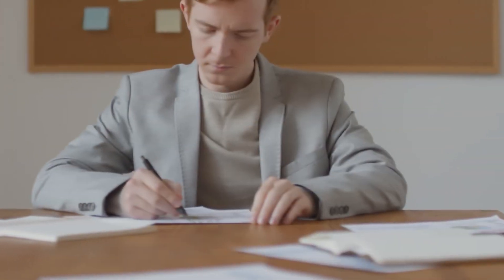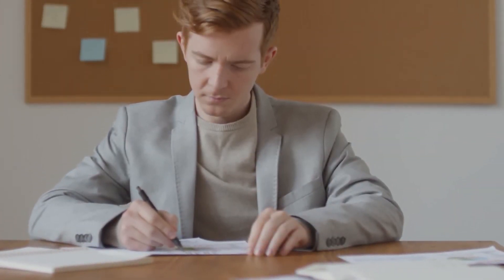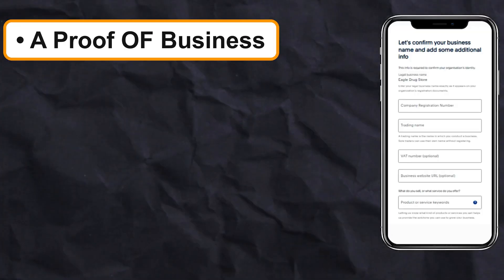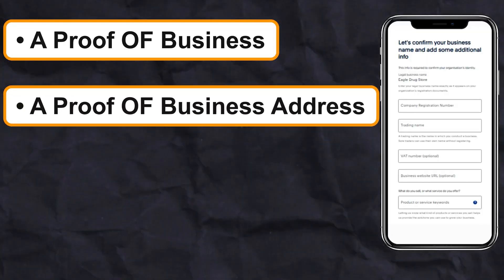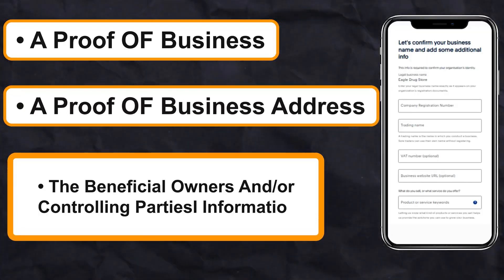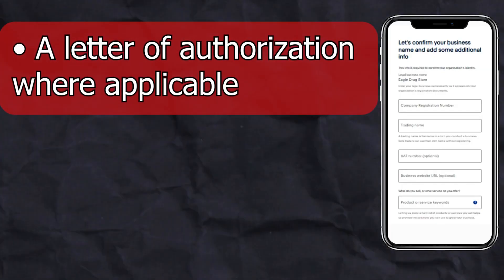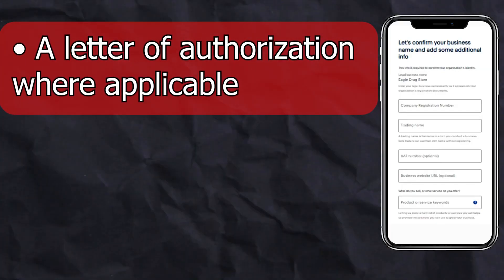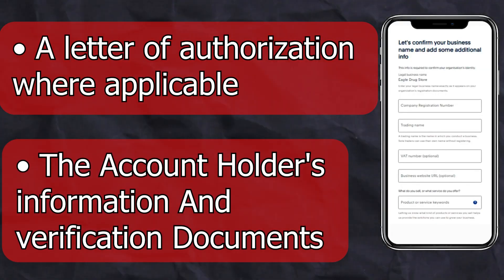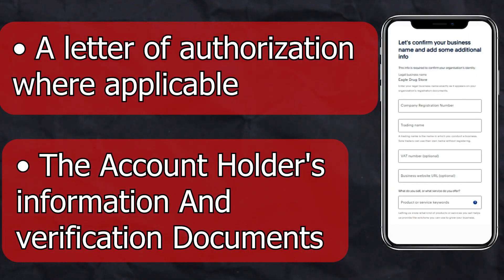First, you'll have to enter the suitable type for your business, and after that they'll provide you with the requirements. You'll have to provide a proof of business, a proof of business address, beneficial owners or controlling parties information, a letter of authorization where applicable, and finally the account holder's information and verification documents.